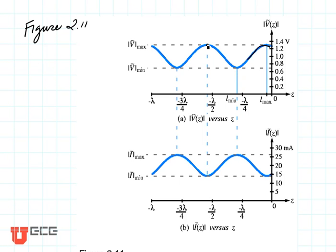The envelope has a maximum value that we're going to call Vmax, and it has a minimum value that we're going to call Vmin. This is not the minimum of the time domain waveform — Vmax is the largest amplitude that the time domain reaches anywhere on the line, and Vmin is the minimum value that the time domain waveform reaches anywhere on the line. So we're going to use these two values, Vmin and Vmax.